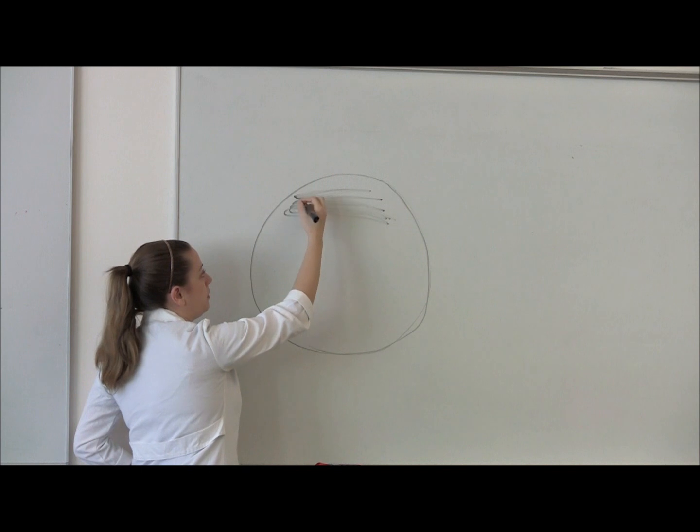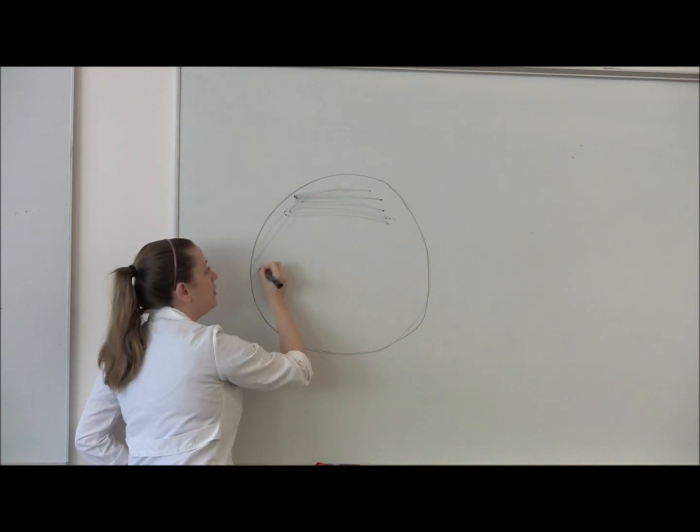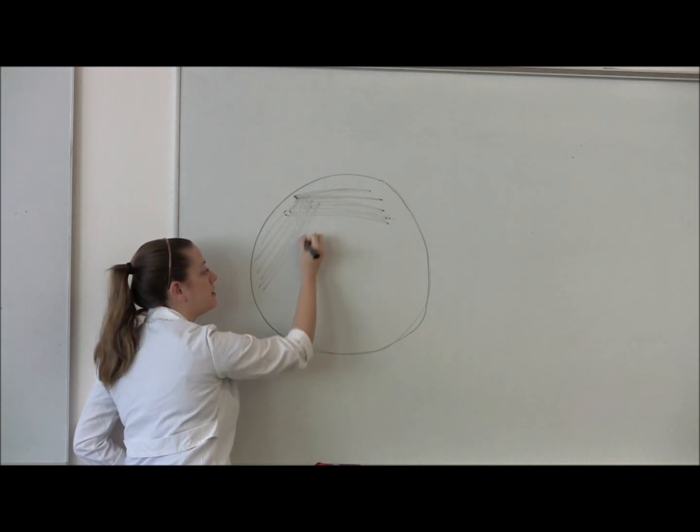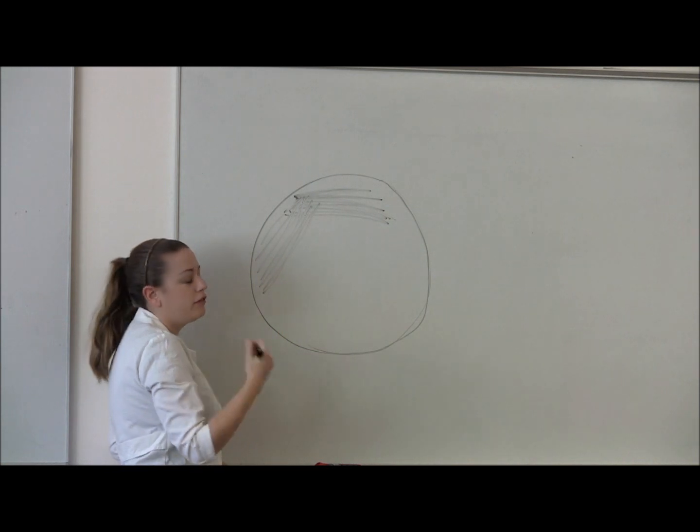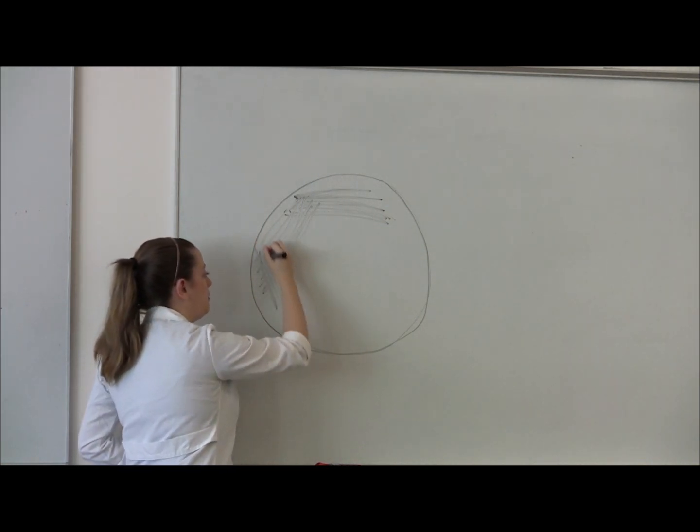After your loop has cooled, you're going to take your loop, go back into the first quadrant, and take bacteria and spread it out into your second quadrant. You'll flame your loop once again, let it cool, and then do the same thing into the third quadrant.